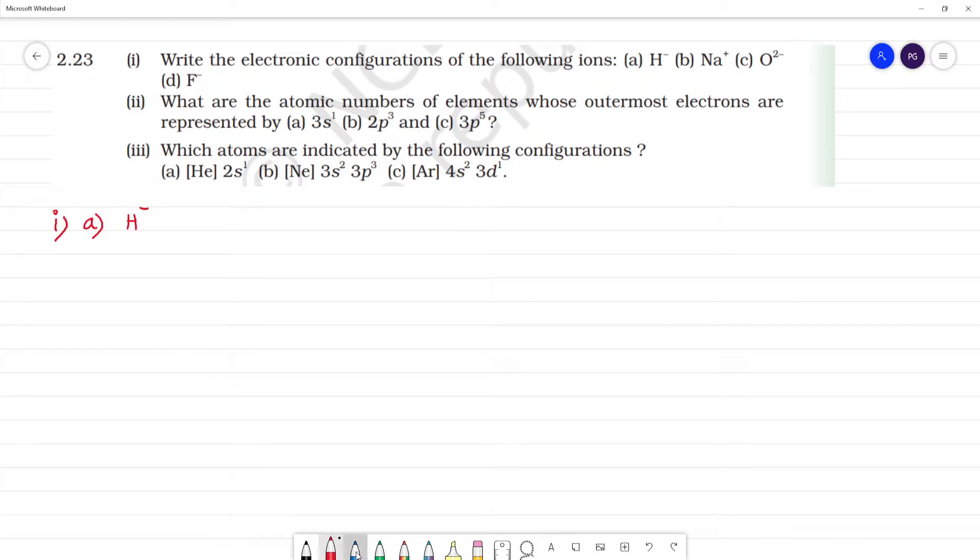H minus electronic configuration. Hydrogen has atomic number 1, the electronic configuration is 1s1. Now H minus electronic configuration means an electron is added. H has 1 electron with configuration 1s1. H minus means one electron is added, so number of electrons is 2 and the electronic configuration is 1s2.